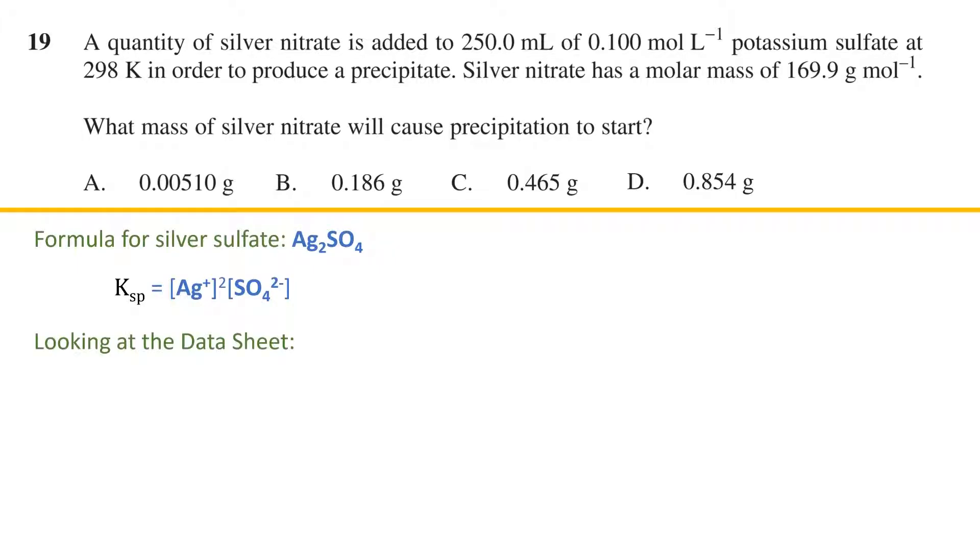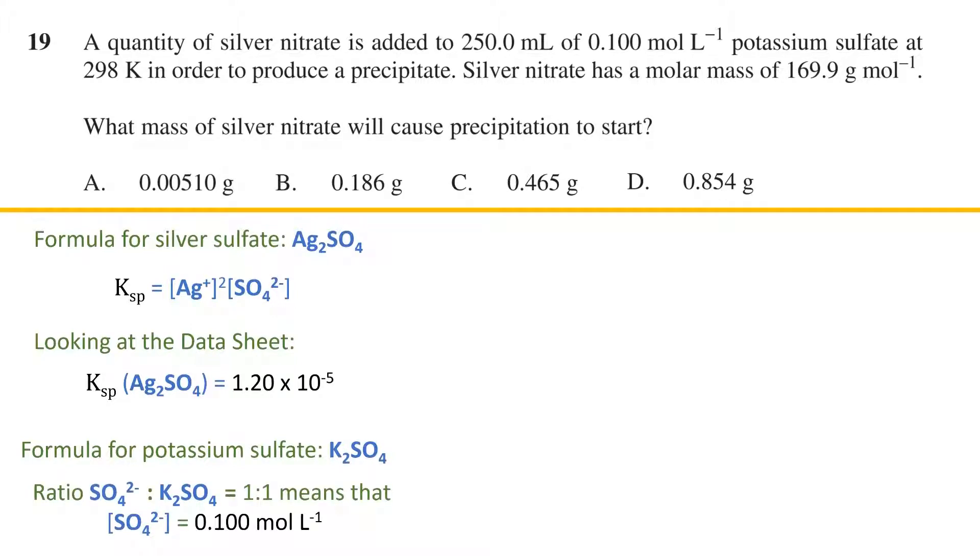Looking at the data sheet at the back we find that the Ksp for silver sulfate at 298 kelvin is 1.20 times 10 to the negative 5. The formula for potassium sulfate is K₂SO₄ and because the ratio of sulfate to potassium sulfate is 1 to 1, this means that the sulfate concentration is 0.100 moles per litre just the same as the concentration of potassium sulfate.